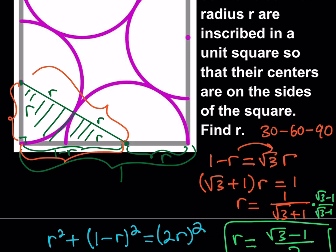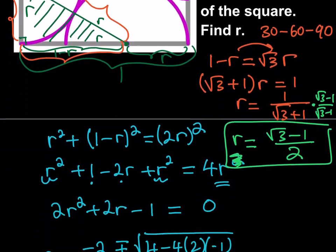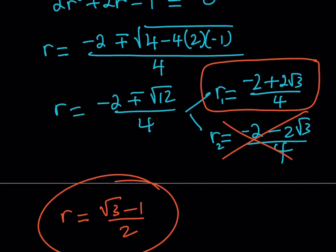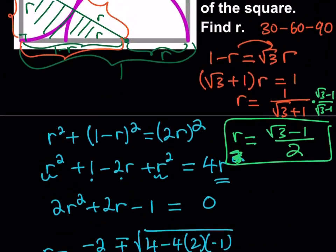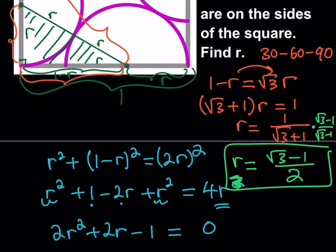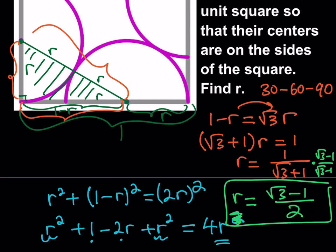So basically, we got the same answer from two different methods. And this is easier because as soon as you see that property, 30-60-90, you should definitely go for it. I just wanted to show you the alternative methods. So this brings us to the end of this video.